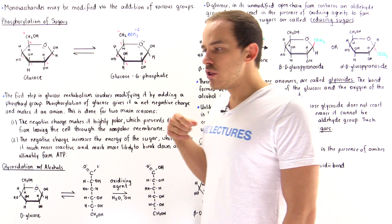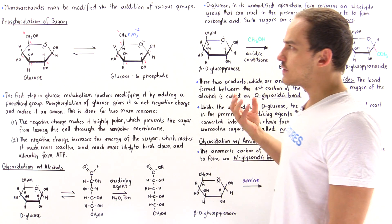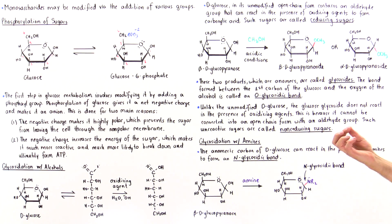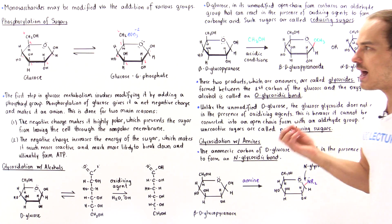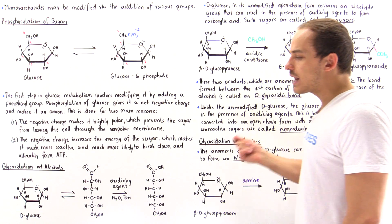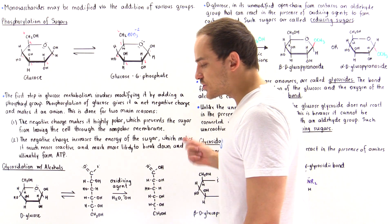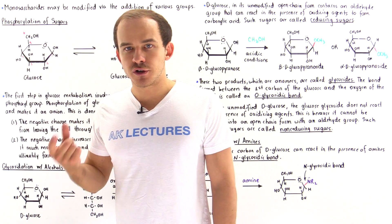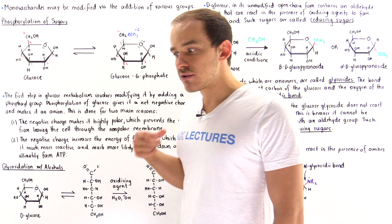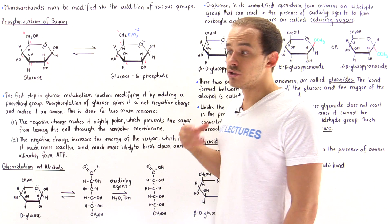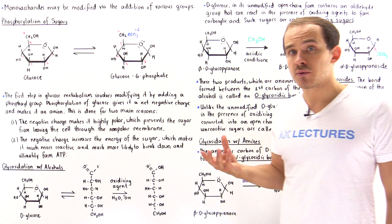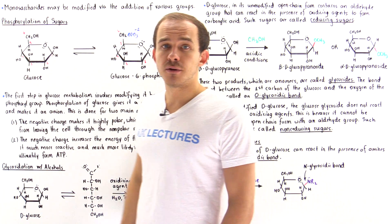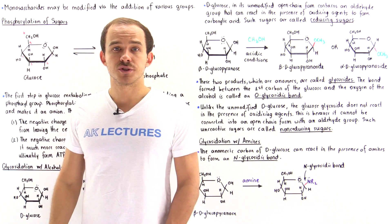The major point of this lecture is that sugars can be modified in a variety of different ways. By modifying the sugar molecules, our cells can actually control the properties and the reactivities of these sugar molecules.